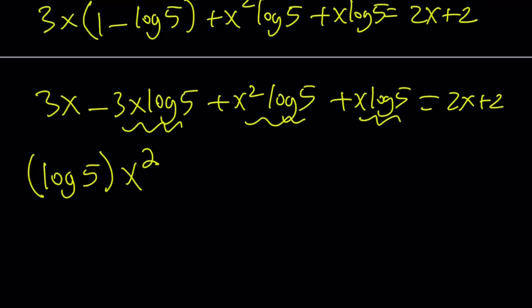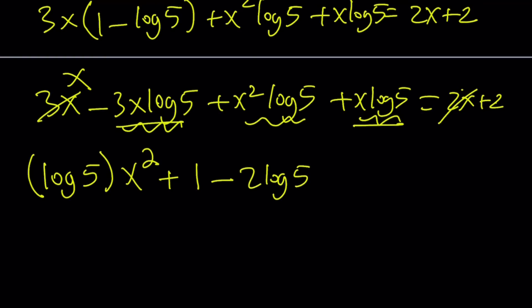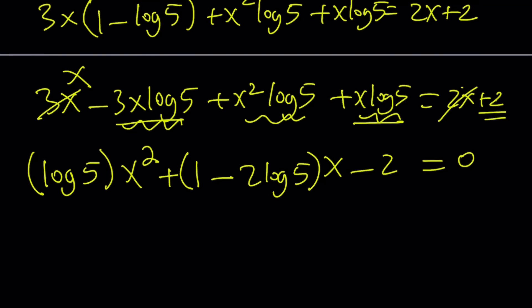The 2x will be subtracted. Subtracting 2x and subtracting 2, the coefficient of x becomes 1 minus 2 log 5. So the full quadratic is: log 5 times x squared, plus (1 minus 2 log 5) times x, minus 2 equals 0. This is quadratic in x, so we can use the quadratic formula.